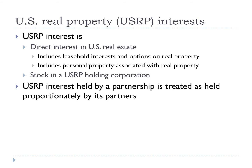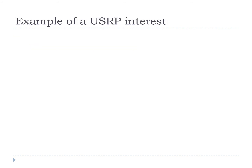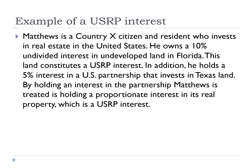In general, a U.S. real property interest held by a partnership is deemed to be held by its partners; the partnership itself is not treated as a U.S. real property interest. Here's an example: Matthews is a Country X citizen and resident who invests in real estate in the United States. He owns a 10% undivided interest in undeveloped land in Florida, which constitutes a U.S. real property interest. In addition, he holds a 5% interest in a U.S. partnership that invests in Texas land. By holding an interest in the partnership, Matthews is treated as holding a proportionate interest in its real property, which is a U.S. real property interest.